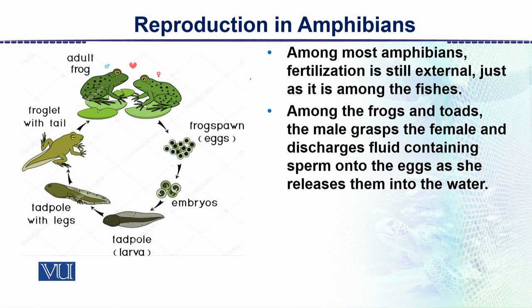At the time of fertilization, during the monsoon season when temperature is moderate and humidity is high, the ovaries and testes develop and the female produces thousands of eggs. When the female becomes gravid, the male mounts onto the female and presses her belly so that the ripened eggs come out of the body.